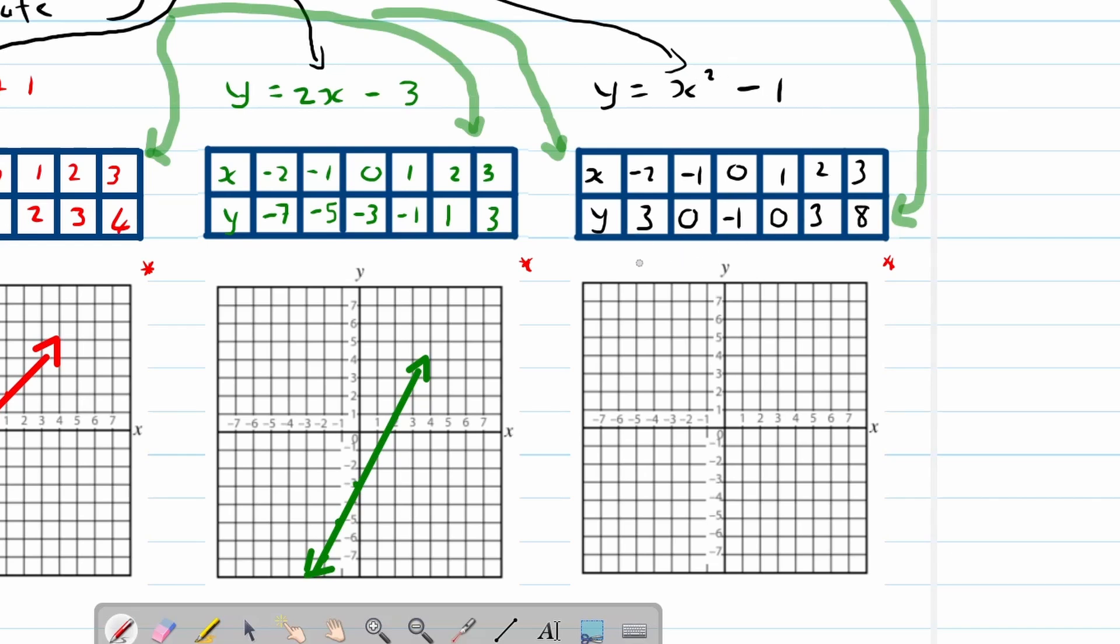So you can see this is definitely a different type of function and we call this a parabola, a quadratic function. So where x is negative 2, y is equal to 3. Where x is negative 1, y is equal to 0. Where x is 0, y is equal to negative 1. Where x is 1, y is equal to 0.